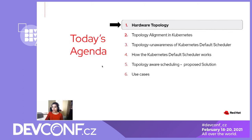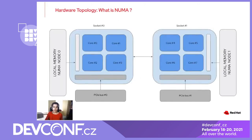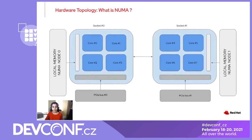Let's look into the first item: hardware topology. What is NUMA and why is NUMA alignment important? NUMA stands for Non-Uniform Memory Access. It is a technology available on multi-CPU systems that allows different CPUs to access different parts of the memory at different speeds. Any memory directly connected to a CPU is considered local to that CPU and can be accessed very fast, as opposed to memory which is not directly connected, which is considered non-local. All memory on a NUMA system is divided into a set of NUMA nodes, with each NUMA node representing the local memory for a set of CPUs or devices.